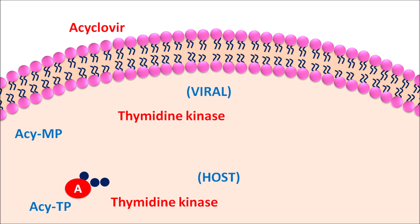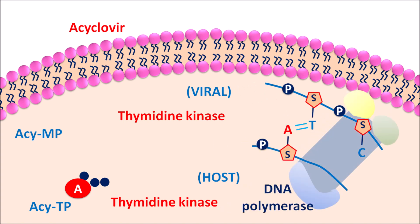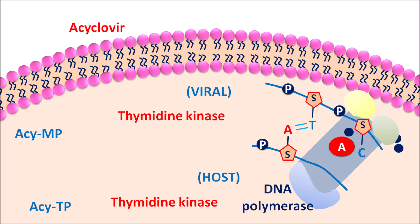Acyclovir triphosphate is the complete active form of acyclovir. In this triphosphate form, it can compete with guanosine triphosphate and be incorporated within the growing viral DNA chain. During DNA synthesis, base pairing takes place mediated by the DNA polymerase enzyme. Acyclovir triphosphate is incorporated within the DNA chain, but it cannot function like guanosine, so DNA polymerase activity is inhibited, leading to inhibition of DNA synthesis.